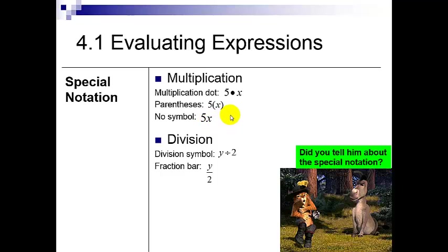If it was 5 smacked up against a 4, that's not 5 times 4, that's 54. Just make sure when you substitute in that you don't think it's 54.